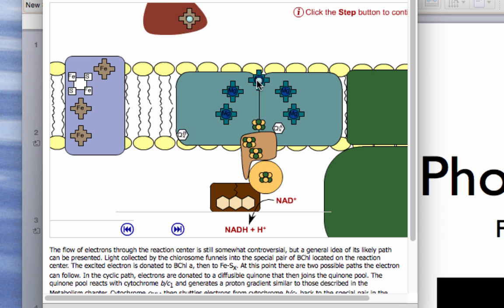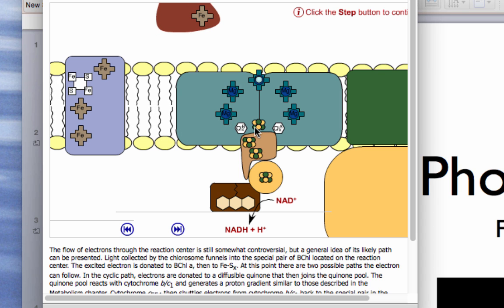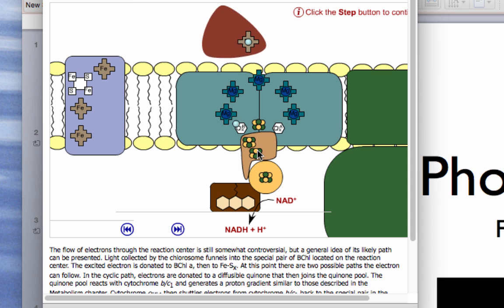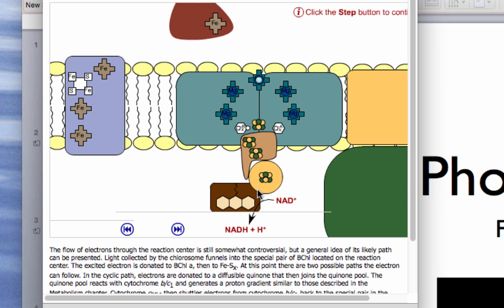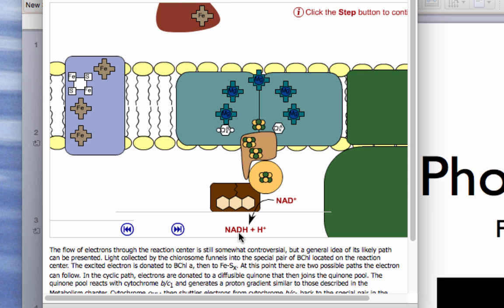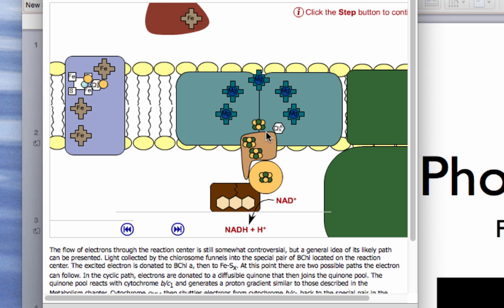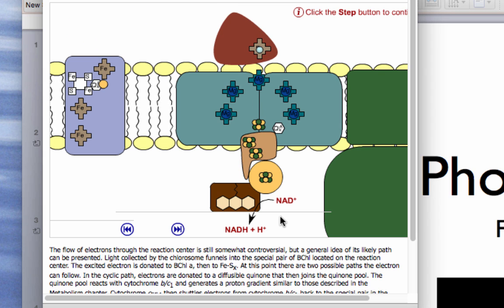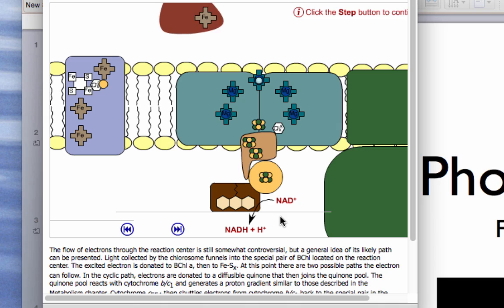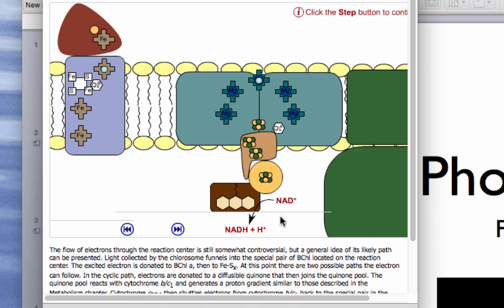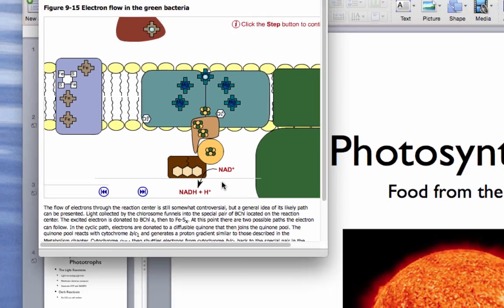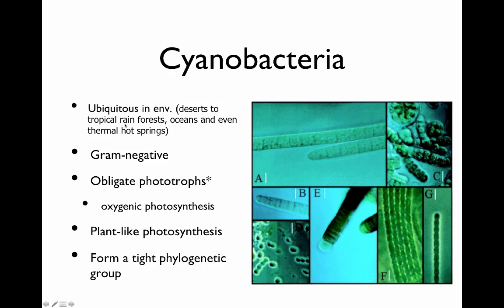An alternate pathway generates NADH. These electrons can, instead of going to the quinone, go to an iron-sulfur center, through a few complexes, and end up on NAD to make NADH. In this case, the electrons are boosted to a high enough energy that you don't need any tricks — they'll just donate directly to NAD to form NADH.